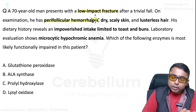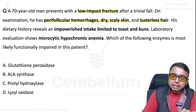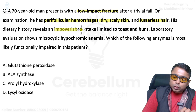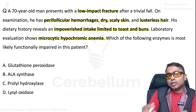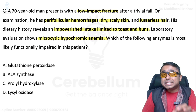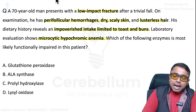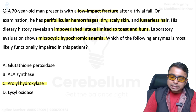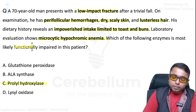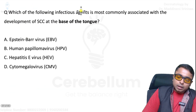Next: low-impact fractures, perifollicular hemorrhages, corkscrew hair, dry and lusterless scaly skin — there is a nutritional problem. Most likely diagnosis is vitamin C deficiency, that is scurvy. Among the given options, the enzyme functionally impaired is prolyl hydroxylase.